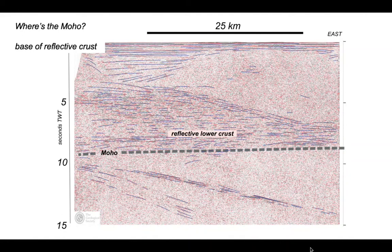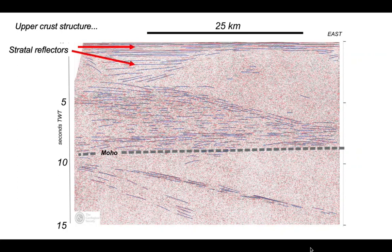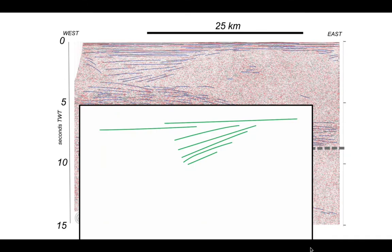Now let's turn our attention to structures within the crust, particularly the upper crustal structure. The shallow part of the section has some pretty prominent reflectors, and we assume these represent sedimentary rocks — strata reflectors. We can see that the strata reflectors in here are patchy. There's a horizontal sequence at the surface, presumably representing relatively young rocks that are very little tilted. As we go down, the rocks become progressively more tilted.